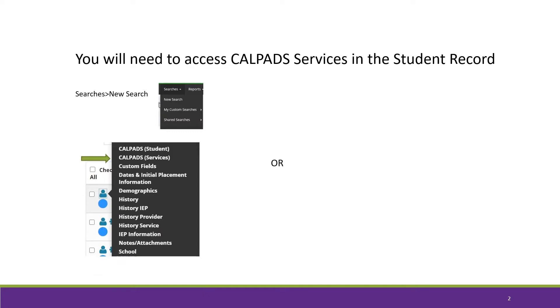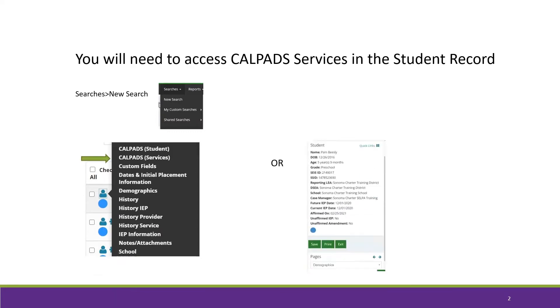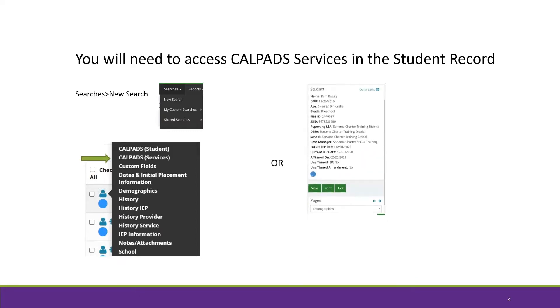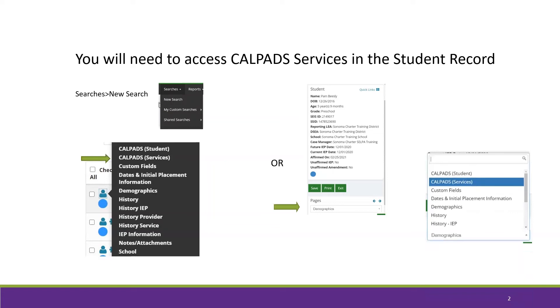If you're already in the student's record, scroll down to the pages — the default is Demographics. Click in this section and then select CalPAD Services.